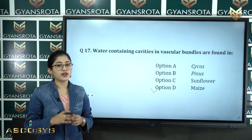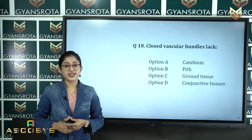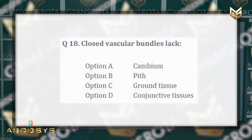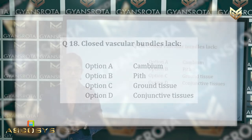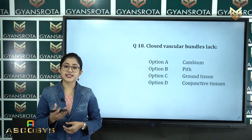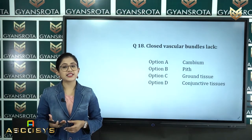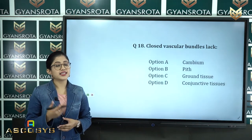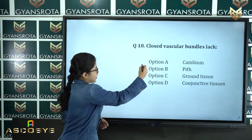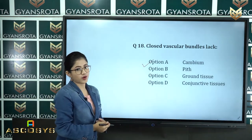Question number 18: Closed vascular bundles lack — option A cambium, option B pith, option C ground tissue, option D conjunctive tissue. This is from the chapter Anatomy of Flowering Plants. Closed vascular bundles lack cambium, so option A is the correct answer.